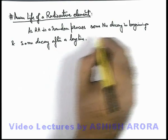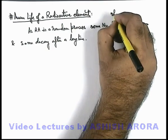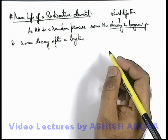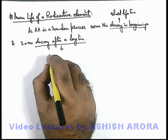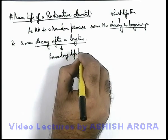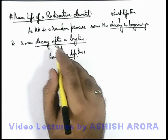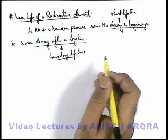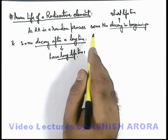In this situation, those nuclei which decay in the beginning have a short life span or short lifetime as parent nuclei, and those nuclei which decay after a long time have a long lifetime. So in a random process, as nuclei continuously decay, few have short lifetime and few have long lifetime — different nuclei in the sample have different lifetimes for which they exist as parent nuclei.